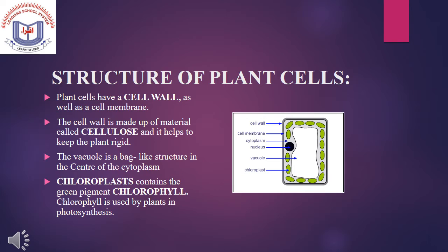Structure of Plant Cell: Plant cells have a cell wall as well as a cell membrane. The cell wall is made up of a material called cellulose, which helps to keep the plant rigid. The vacuole is a bag-like structure in the center of the cytoplasm, and it contains a solution of sugar and salts.